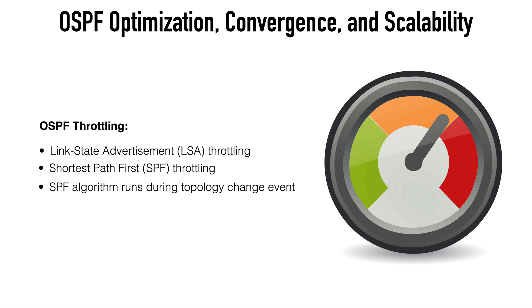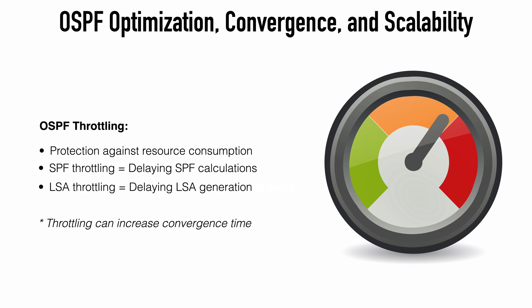Let's talk about some throttling techniques in OSPF, namely LSA throttling and SPF throttling. SPF of course refers to the Dijkstra Shortest Path First algorithm used by OSPF to find the shortest path between two nodes. OSPF is a link state protocol and it uses LSAs to advertise topology changes to other OSPF routers, so if there's a failure or topology change, LSAs allow OSPF to recover and converge alternate paths, which causes OSPF to run the SPF algorithm.